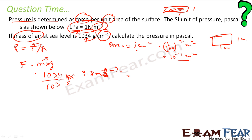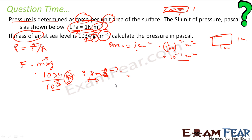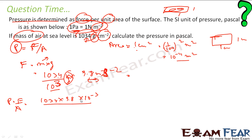Mass was in grams; I made it kg by dividing by 10³. G is the gravitational constant, 9.8 m/s². Pressure equals force by area, so: pressure = [1034 × 9.8 × 10⁻³] divided by [10⁻⁴]. The units are kg × (m/s²) / m² = kg per meter per second square.